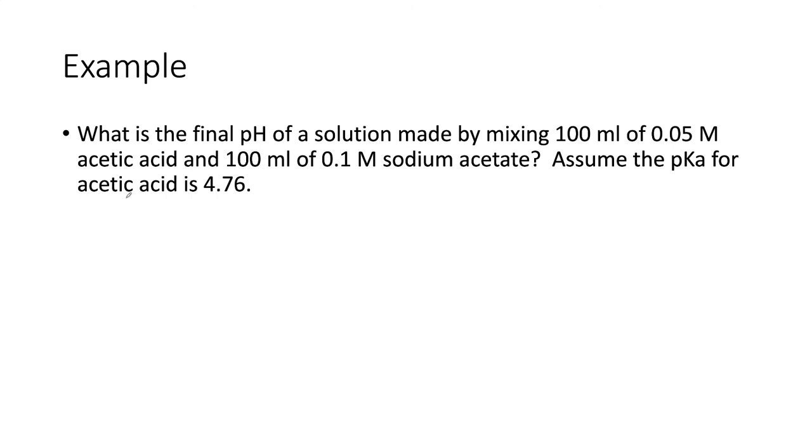So let's look at an example. What's the pH of a solution made by mixing 100 mL of 0.05 molar solution of acetic acid and 100 mL of 0.1 molar acetate? We've got the pKa, so the pKa is 4.76. The pH equals 4.76, and we can do this in two ways. We need to find the concentration of sodium acetate and acetic acid.